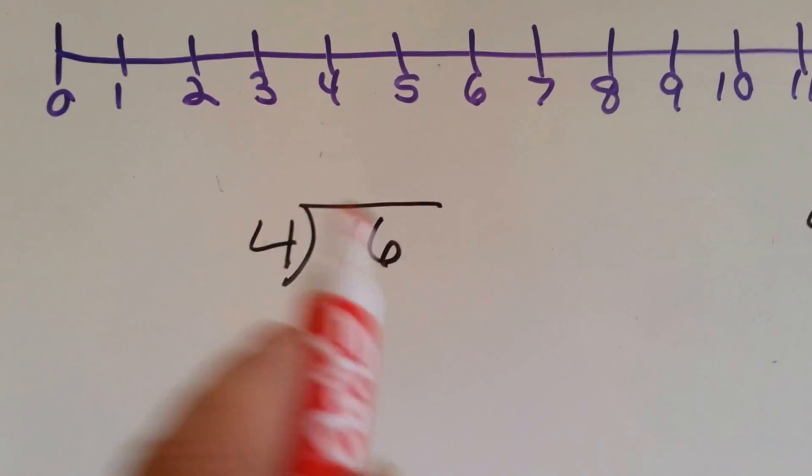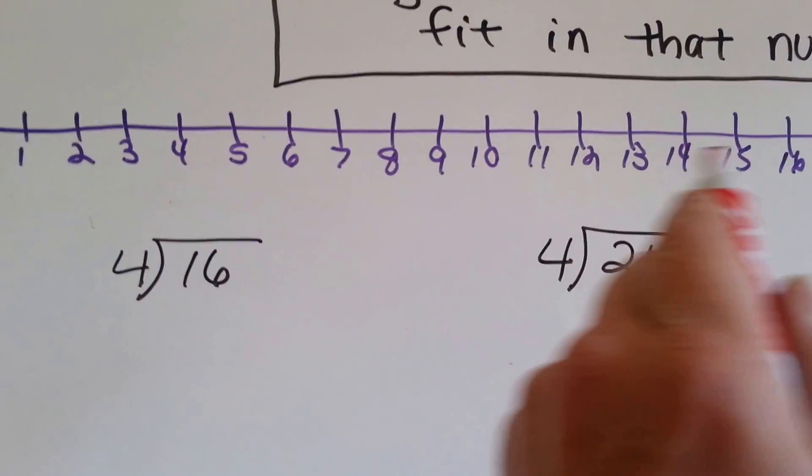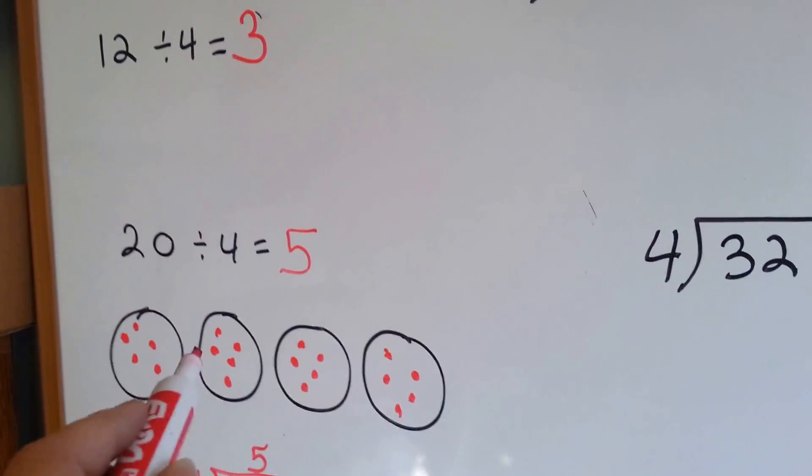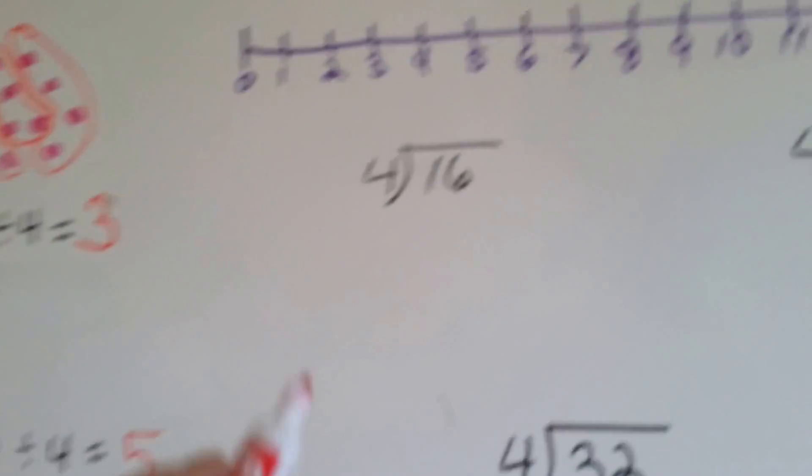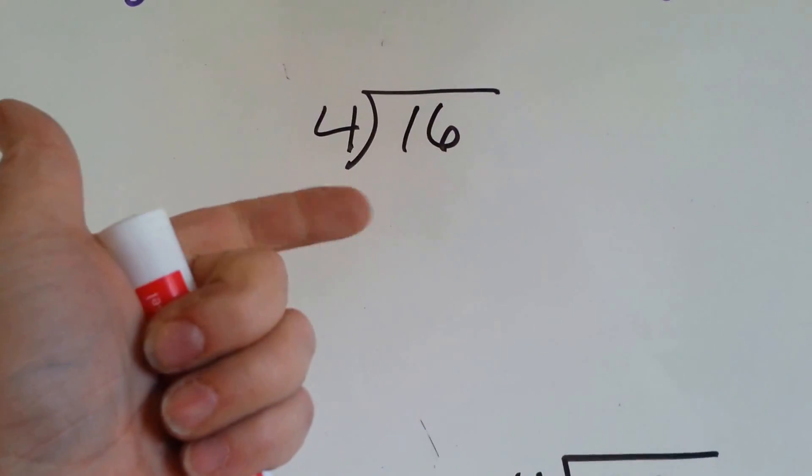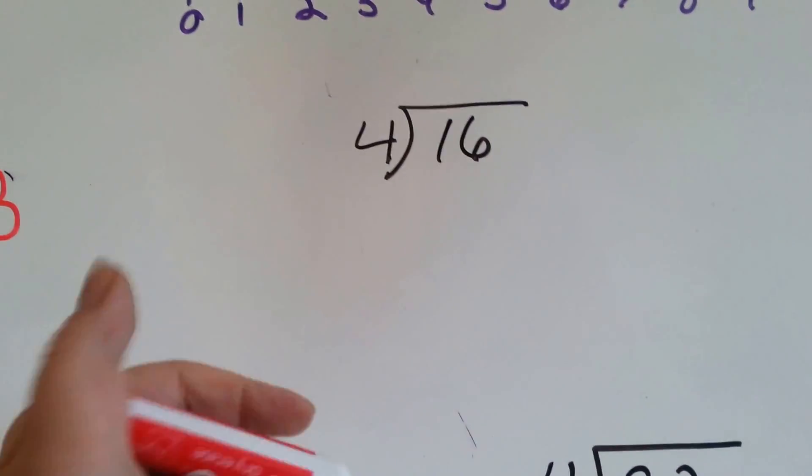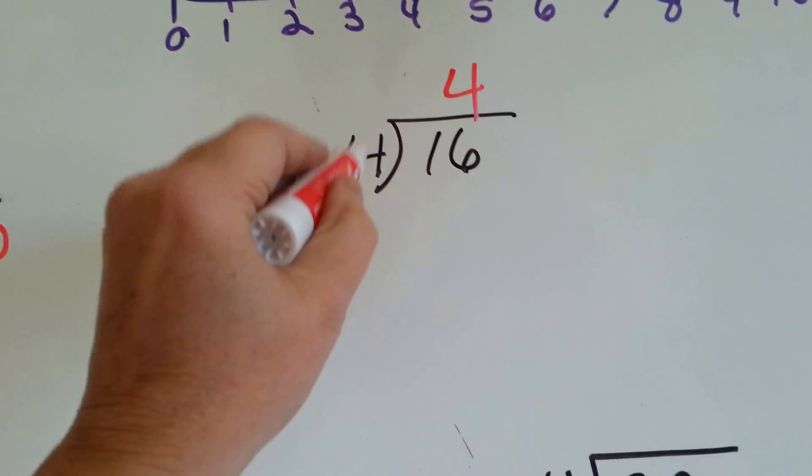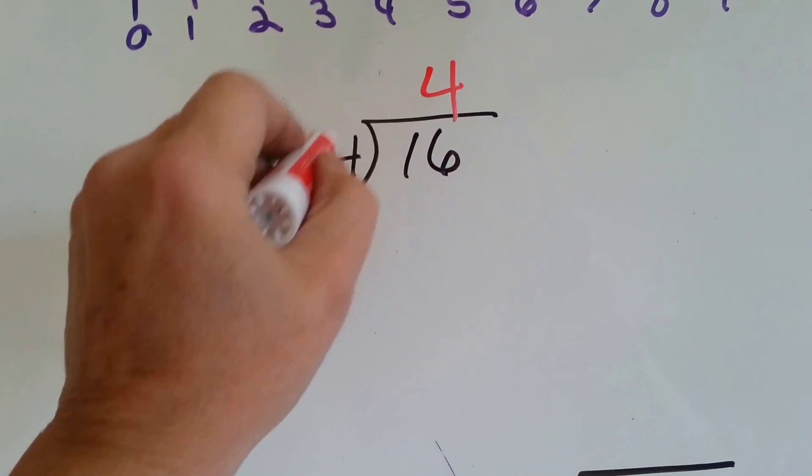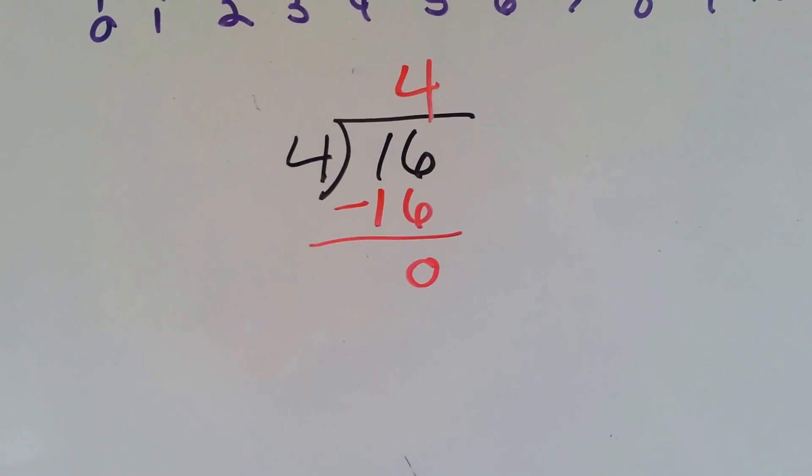4 goes into 16 how many times? Well, we can also use our number line. We can also count on our fingers. Aside from using these ways, let's count on our fingers by 4s. 4, 8, 12, 16. 4 fingers. 4 goes into 16 4 times. To finish it, we need to do the multiplication. 4 times 4 is 16. We need to do our subtraction and get our 0.